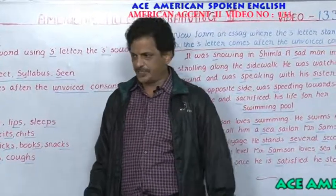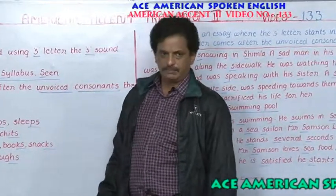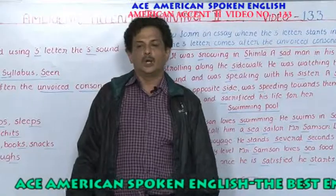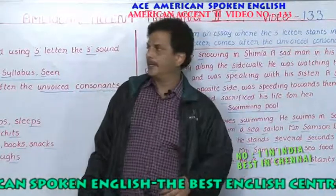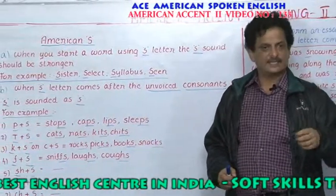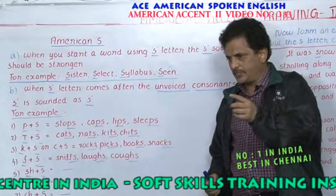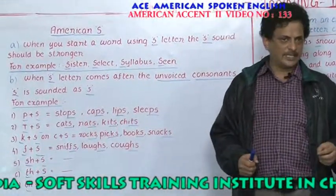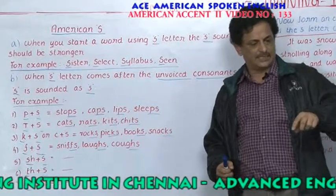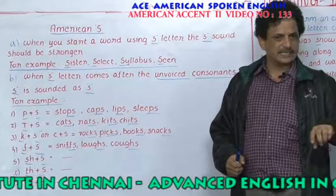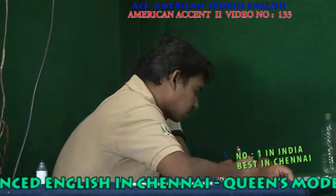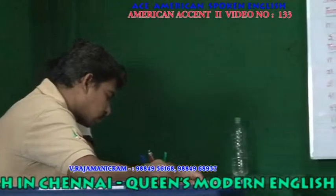Dear friends, welcome to his American Center. Take your American accent training book number two. We have come to share region number 133, coming to the American S sound. Just before this video, we have seen that after a vowel, S is changed and pronounced differently.